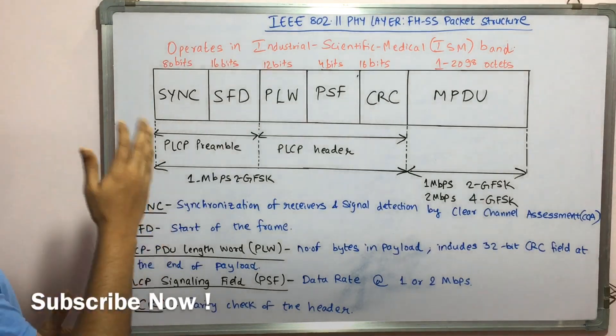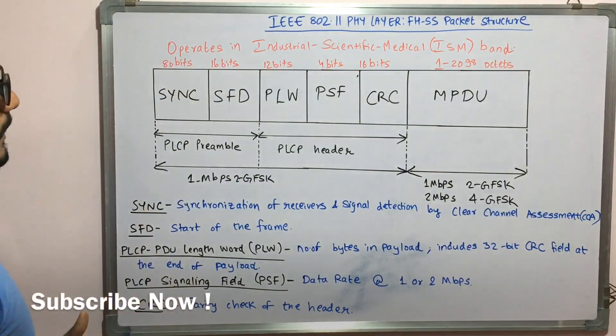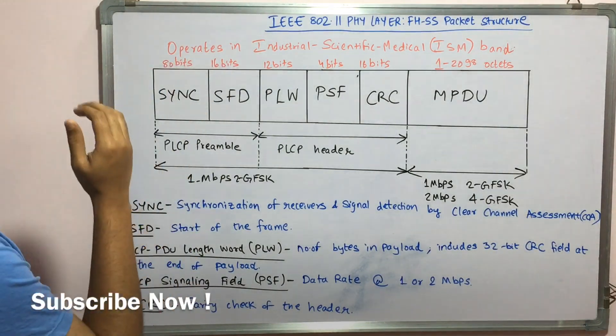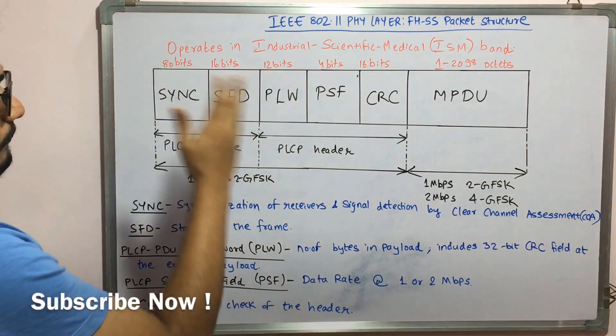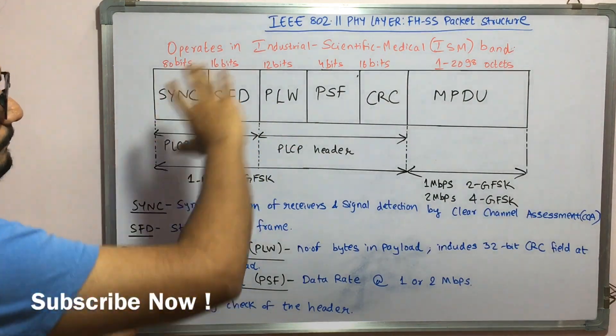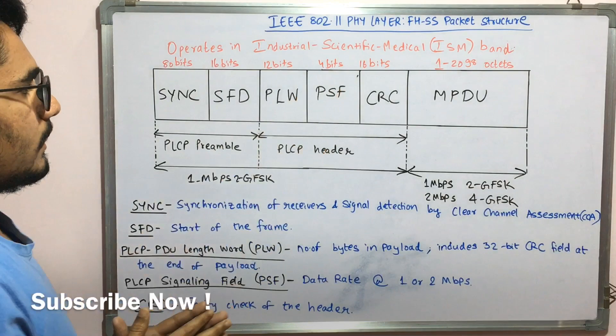Next we move on to the SFD, that is start frame delimiter, which is of 16 bits. It indicates the start of the frame — from where the frame actually starts and from where you can have the data.